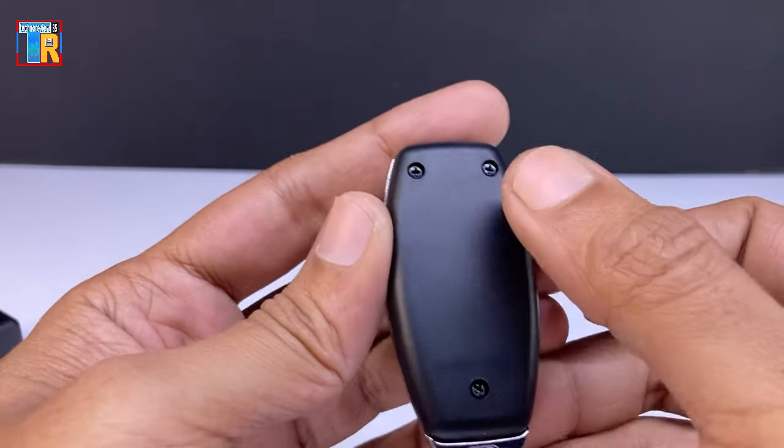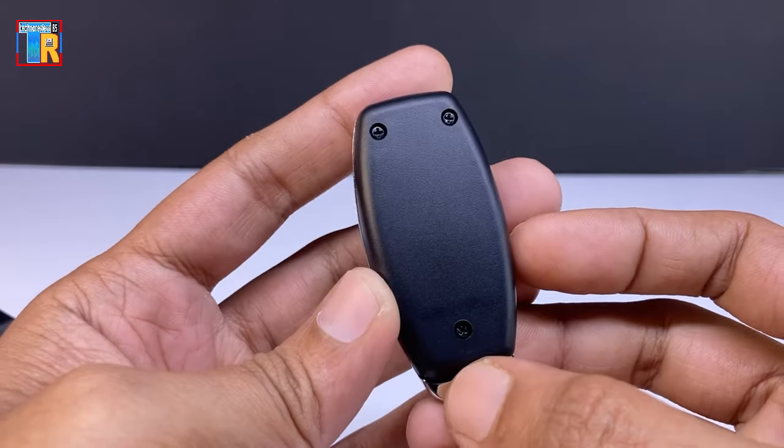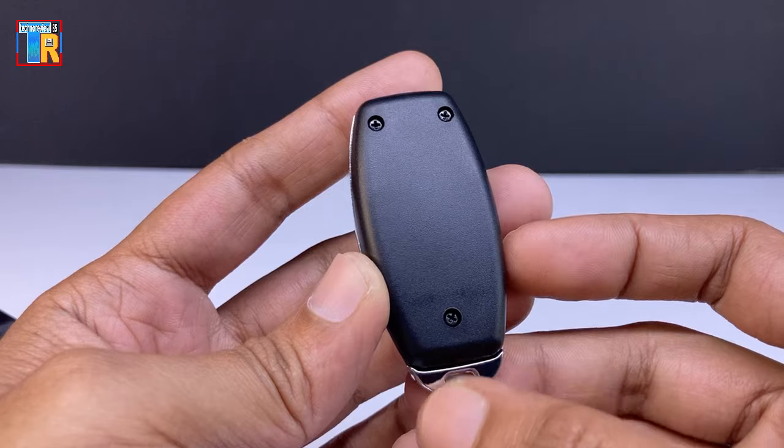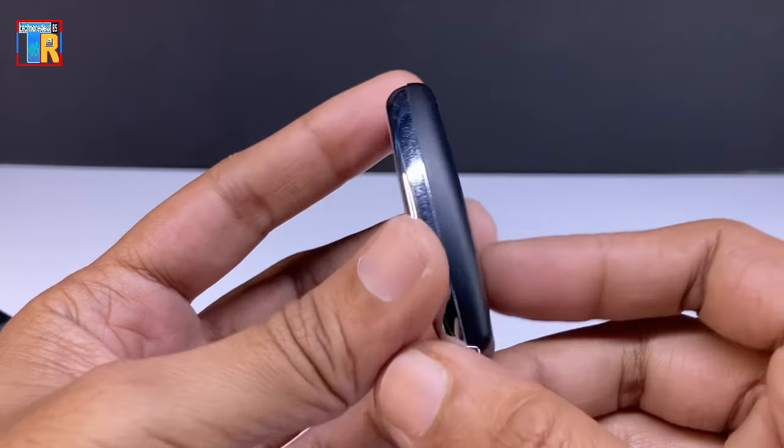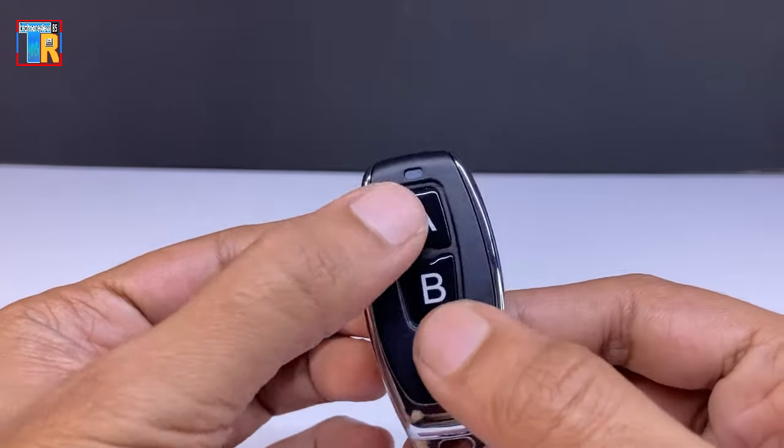You need to insert a coin cell battery by removing those three screws and then it will be ready to use. It has an LED indicator.